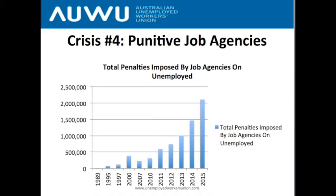After privatisation, penalties increased massively — about three or four times by 2000. Since then there have been more increases under the private system, with more activities unemployed workers were forced to attend, including work-for-the-dole introduced in 1997. From 2010 to 2015 alone there was an approximately eight-times increase in penalties — from about 300,000 to 2.1 million penalties in five years — which is completely shocking and isn't really talked about.